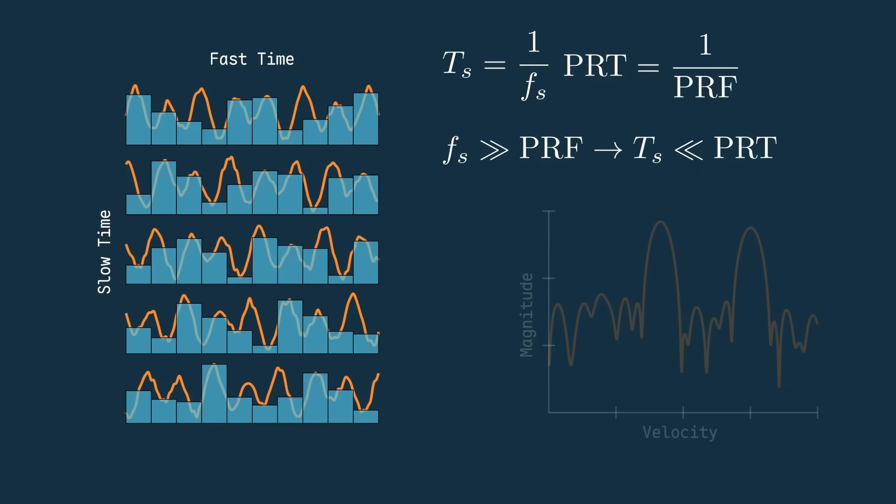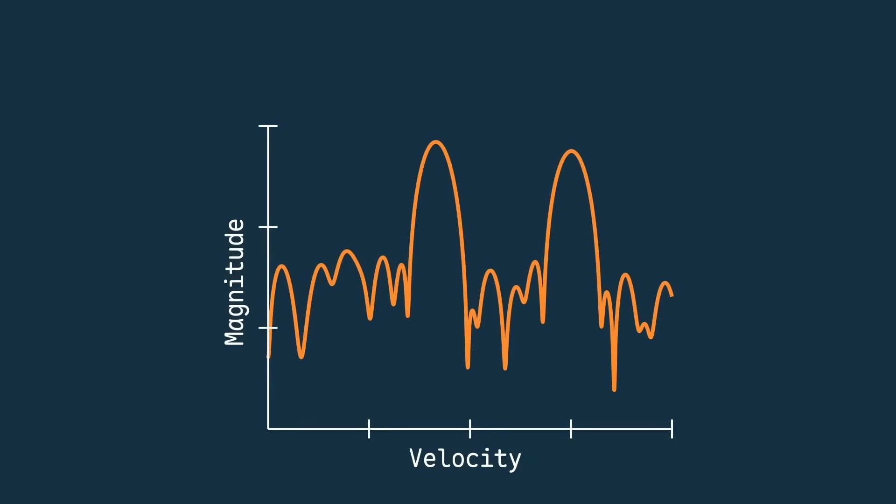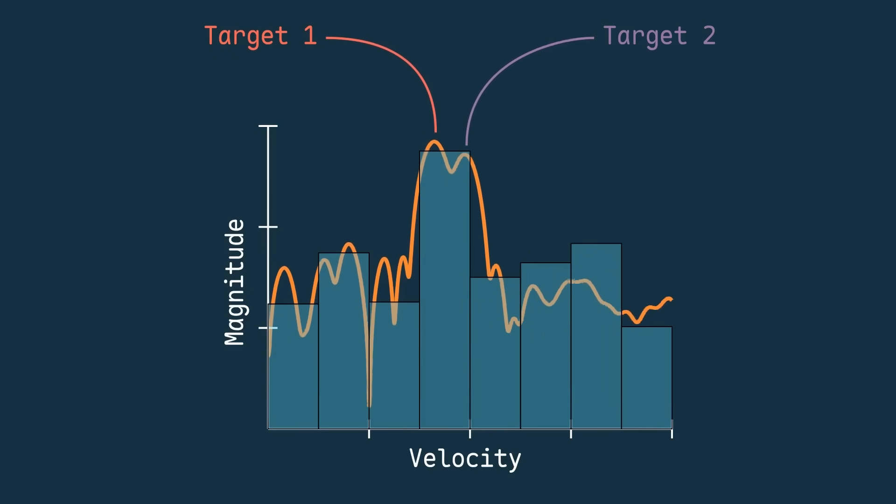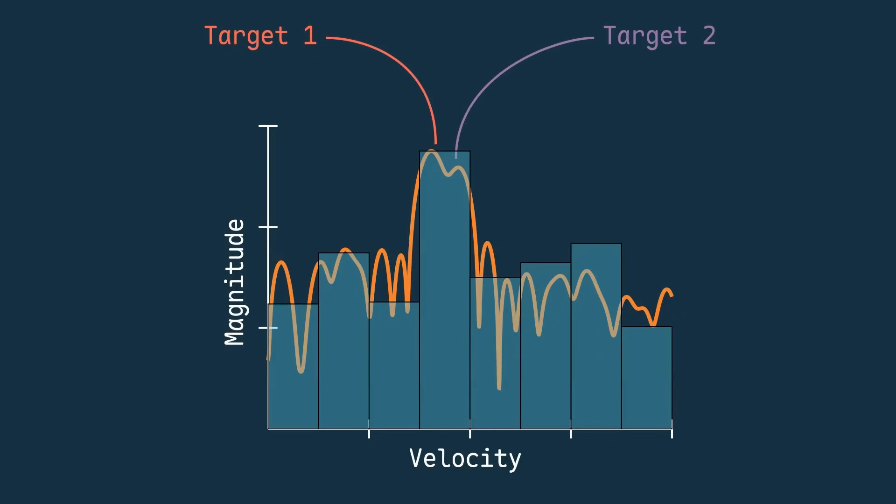So how do we find the velocity resolution of this? Well, don't we just need to find the distance between each of these discrete velocity cells? I mean, if one target is traveling at a velocity here, and another is traveling at a velocity here, that'll just merge into a single value.